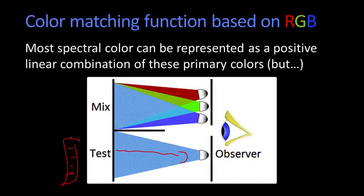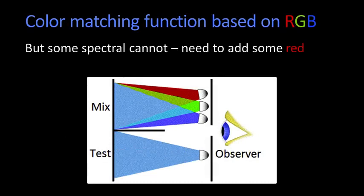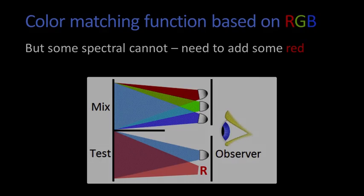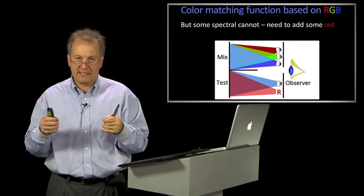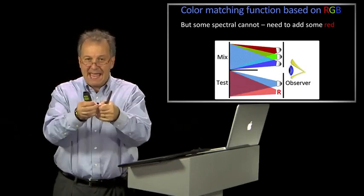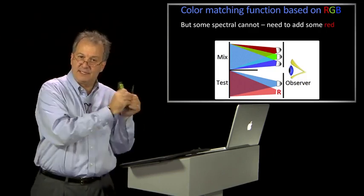And they could put more or less of it, of each of them to try to get it to match the test light that was being produced. And most of the spectral colors could be done this way. You could just add a certain amount of that light. But, it turned out that some of the colors couldn't be matched, unless you actually added a little bit of red to the original test light. That is, in some sense, in the mixture, you had to sort of like have negative red light.